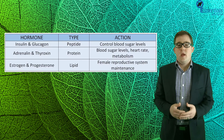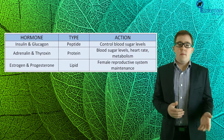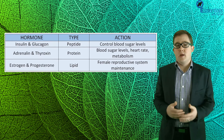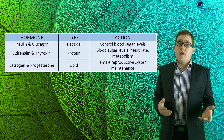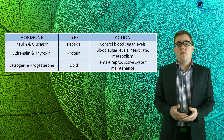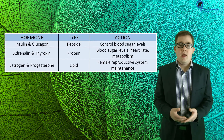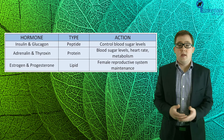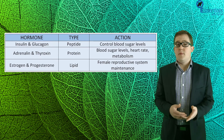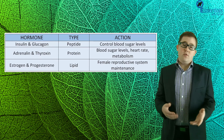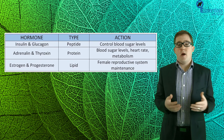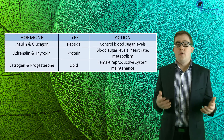Some good examples of each type of hormone can be seen in this table. Insulin and glucagon are types of peptide hormones produced by your pancreas and control blood sugar levels. Adrenaline and thyroxine are types of protein hormones produced by the adrenal and thyroid glands and have varied uses in controlling blood sugar levels, increasing and decreasing heart rate, and stimulating metabolism. And finally, estrogen and progesterone are types of lipid hormones that help maintain female and male reproductive systems and are known as sex hormones.